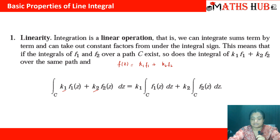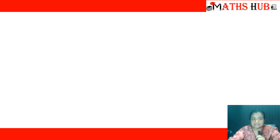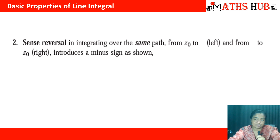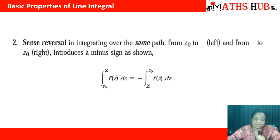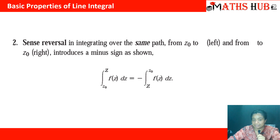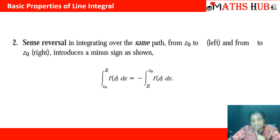The second property of line integral is the sense reversal integral. Whenever you are integrating a complex integral from path z0 to z, you can always reverse the path — change the limits and write it from z to z0 — but then you must introduce a negative sign. So you need to put a minus sign whenever you reverse the direction of integration.